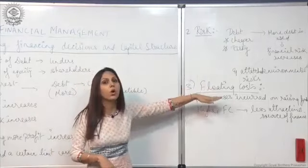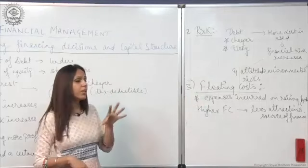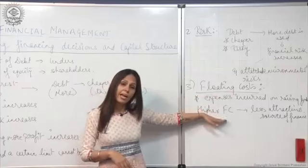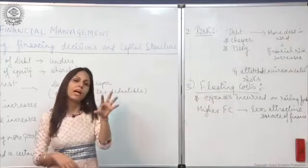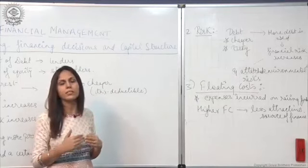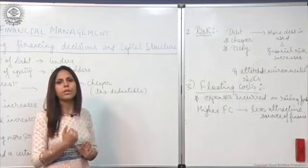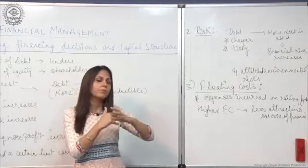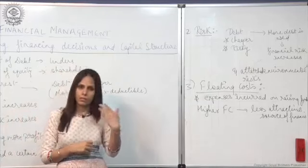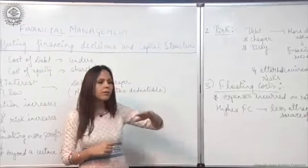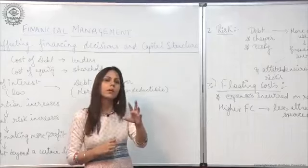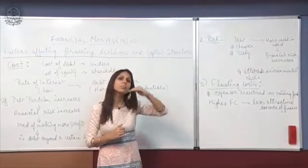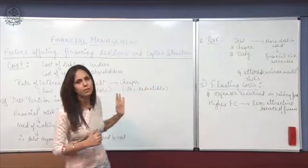The third factor is floating cost, which is the cost incurred in raising fund. If there is a high floating cost, that particular source of finance is considered less attractive. For example, raising fund through shareholders fund by issuing shares involves high floating cost. But if we raise fund through debt fund, we do not have to pay much for raising it, which is why debt fund is considered cheaper than shareholders fund.